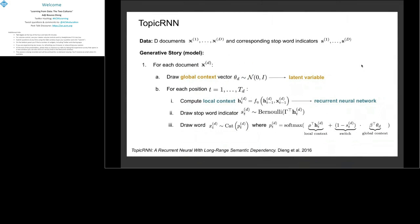Another example that's my own work illustrating how to combine graphical models with neural networks is the Topic RNN family of models, where you're trying to model sequences. In this setting, you're given documents and their indicators. Each document X_D has an observed variable S indicating whether each word is a stop word — words like connectors and adverbs that don't carry semantic meaning. You assign these a stop-word indicator of one, and content words an indicator of zero.